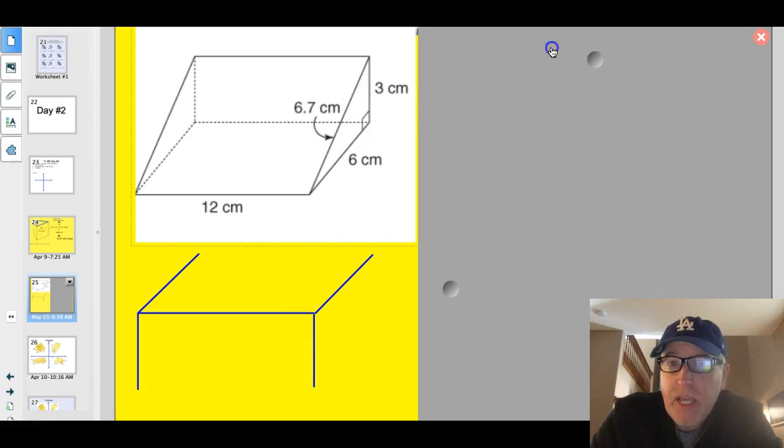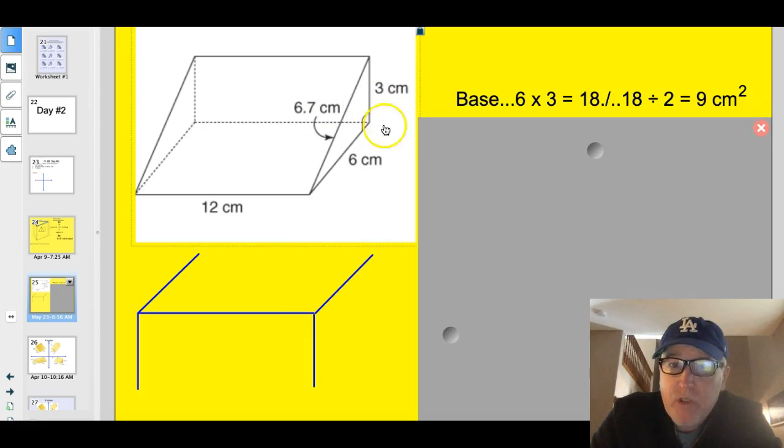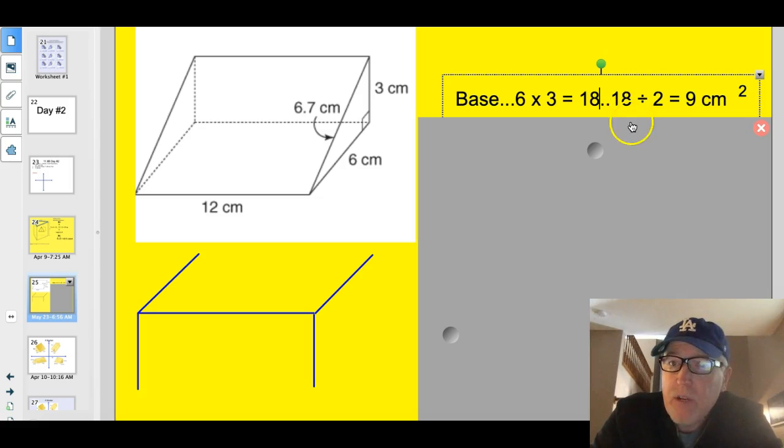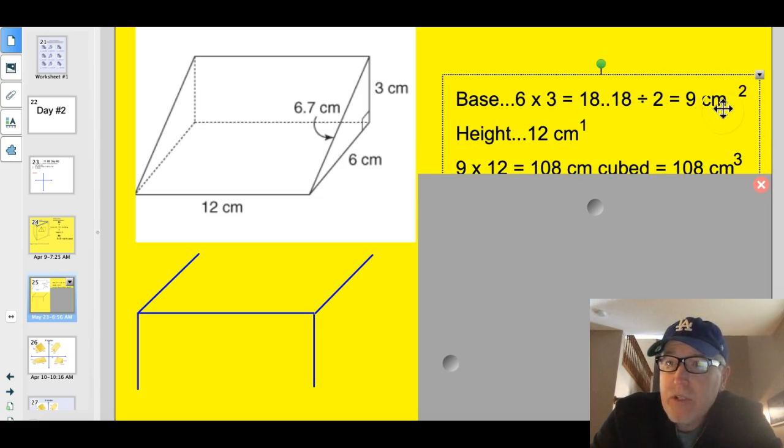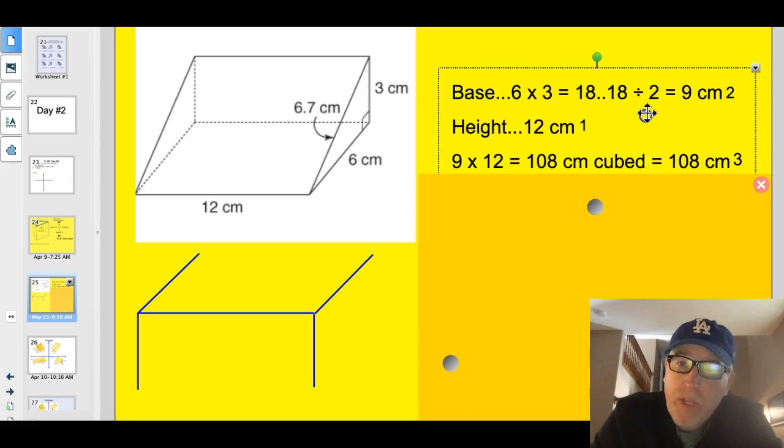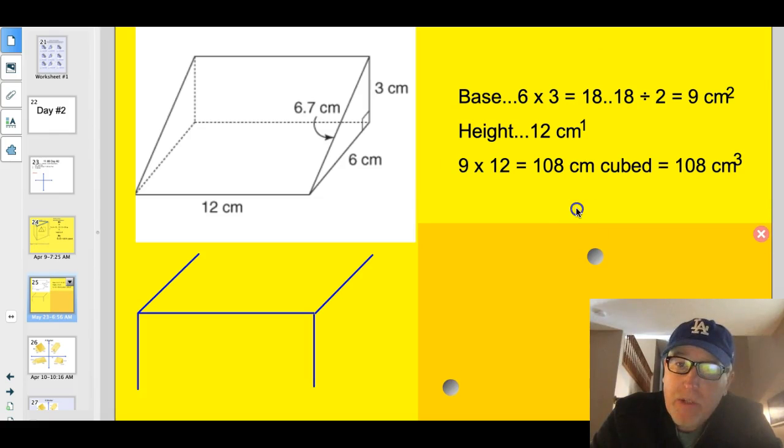So let's go back and take a look at it. The base of this is going to be 6 times 3, okay? And that's going to be 18. You divide that by 2. You've got 9 centimeters squared for the base here. Now the height is 12 centimeters. And so the 9 times the 12, that's the big base times the height. It's 108 centimeters cubed. Now, this time, instead of writing out the word cubed and squared, I used exponents just to show you that.